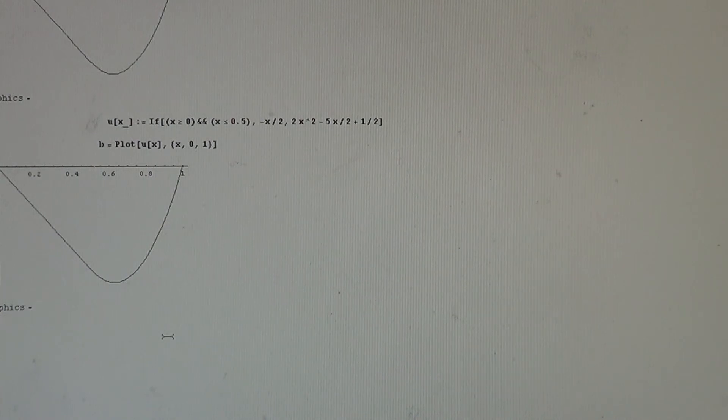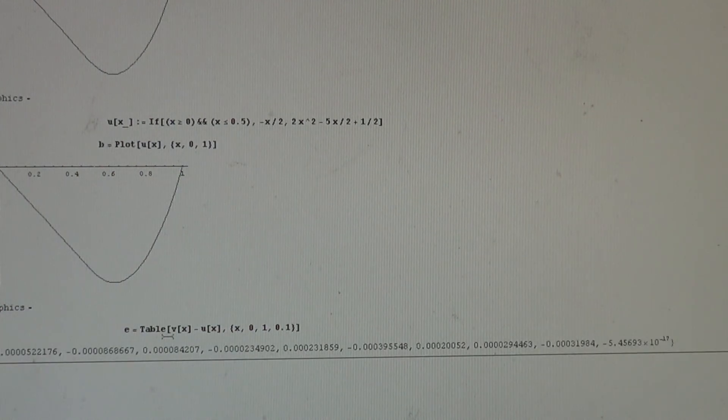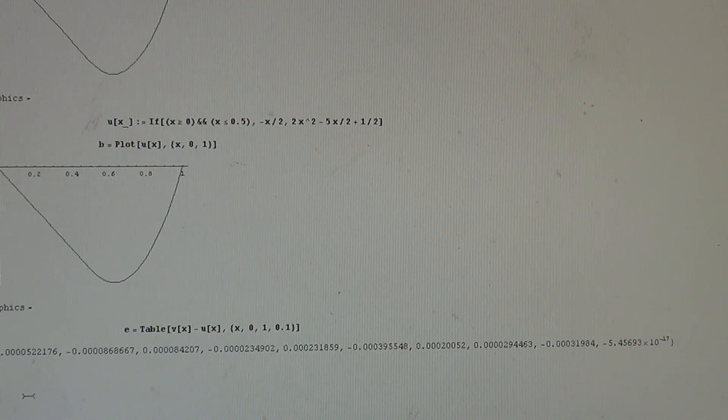So, let us find the difference between the approximate and exact solution using the table command. Table, or what to table, that means V of X minus U of X, table with respect to X in the 0, 1 interval, with the step size 0.1. We have the table. Let us execute that. That is the table.